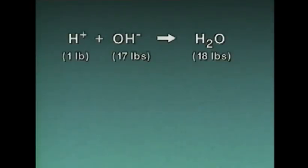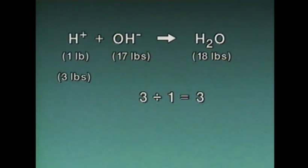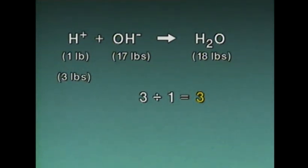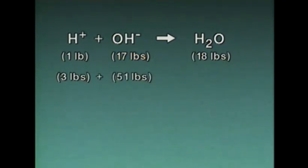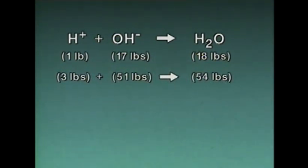But what happens if, instead of one pound of hydrogen, we have three pounds? If we divide the actual weight of hydrogen — three pounds — by the relative weight of hydrogen — one pound — we see that the actual weight is three times the relative weight. This three becomes a multiplication factor for the equation. Multiplying the relative weight of hydroxyl ions (17 pounds) by the factor of three, we see that 51 pounds of hydroxyl ions are needed to react with three pounds of hydrogen. And multiplying the 18 pounds of water by three, we see that 54 pounds of water will be produced. That's how material balances are done.